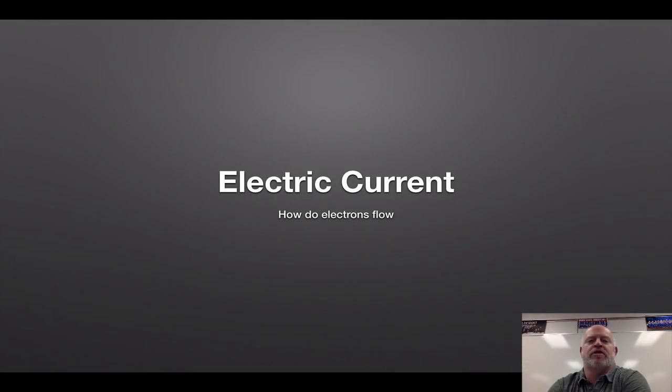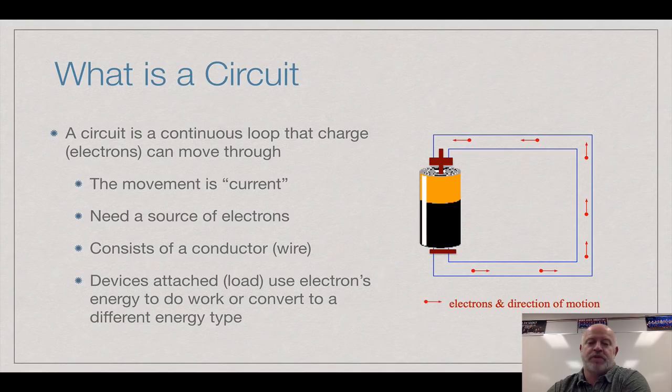In this video lesson, we're going to talk about the next step in the process of electricity, which is dealing with electric current. We've done electrostatics, and now we want to dive into how we get that current to flow once we have extra electrons or a charged substance, and how we get those electrons to flow through and be useful for us in terms of power.